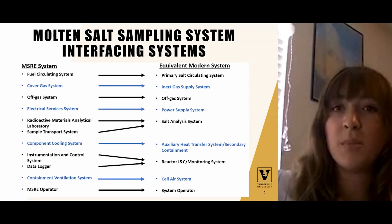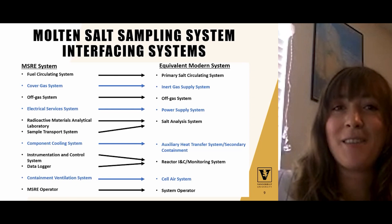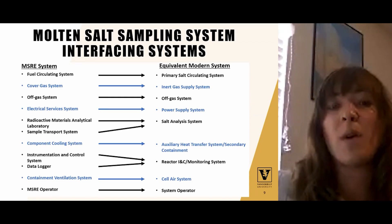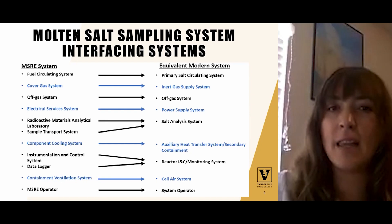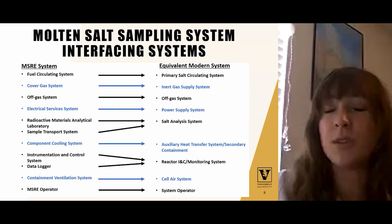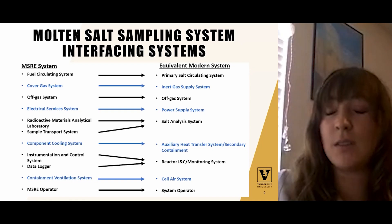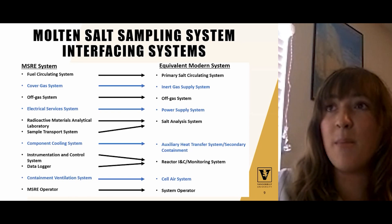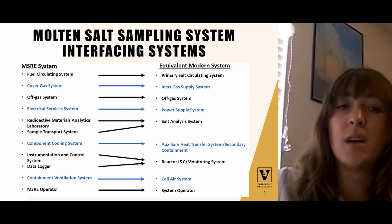Another systems engineering task we have performed is the identification of interfacing systems for a molten salt sampling system within an MSR. Interfacing systems identification is intended to facilitate treatment of physical or functional interactions of a system with its surroundings — extremely important when interfaces with a system containing high radioactivity can represent a crucial design meeting point for overall system safety. To identify these, we used our understanding of the MSRE sampler-enricher and translated its interfacing systems into their modern equivalents. Our analysis indicated that many MSRE subsystems that impacted the sampler-enricher are still going to be important for a modern molten salt sampling system.